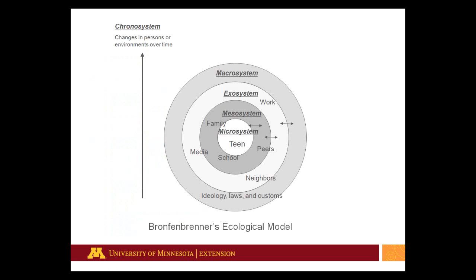This diagram of the ecological model demonstrates the third point of family systems theory: the family must exist within the larger social system. An ecological framework builds on the interaction between the individual and his or her environment — and more specifically, for the purpose of this discussion, the relationship between an adolescent and his or her environment.